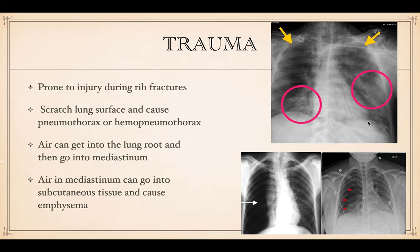Trauma: rib fractures are dangerous because they can pierce the pleura, causing a pneumothorax or hemopneumothorax. Air gets into the pleural space and the lung collapses, as shown here. It's also problematic because the air can get trapped in the subcutaneous tissue if the puncture is really close to the danger zone, and that can migrate up into the neck and face, causing subcutaneous emphysema.